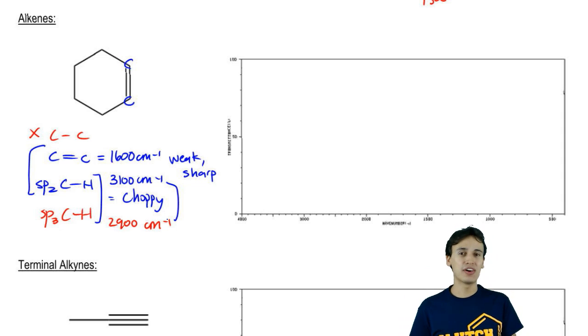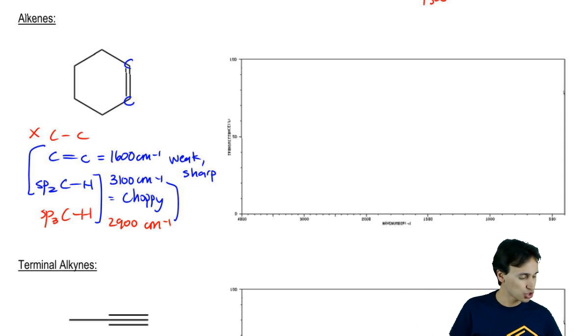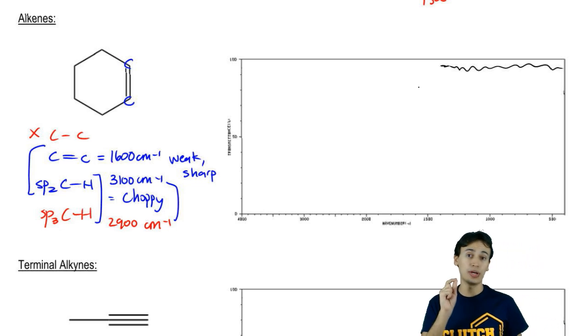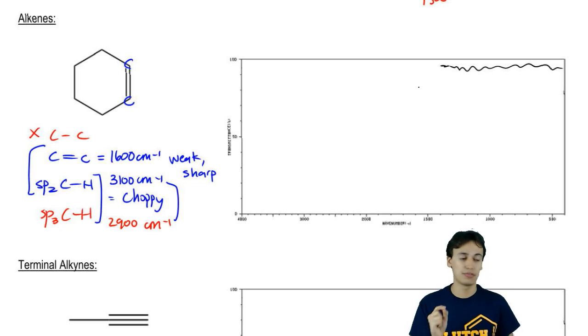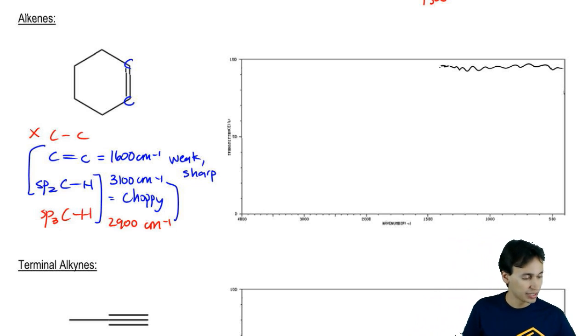Once again, probably better for you to just let me draw this and then you can copy it down. So what we're going to do here is once again, no one cares about 1500. But wait, this time when I cross 1500, I immediately have to draw a weak sharp peak. That's going to represent my CC double bond. This is my CC double bond. So that's my weak sharp peak.